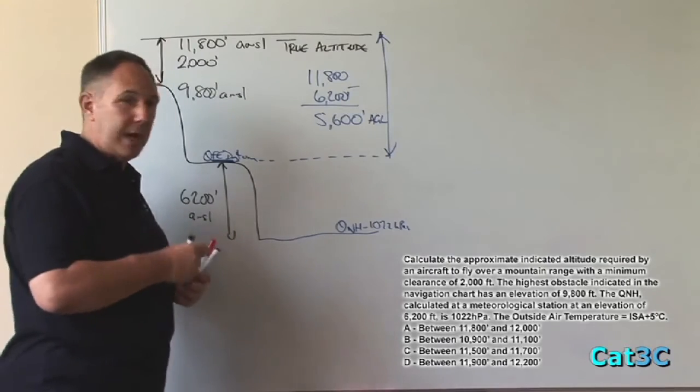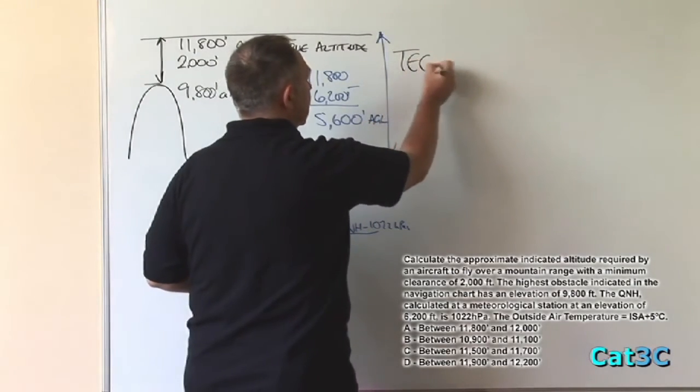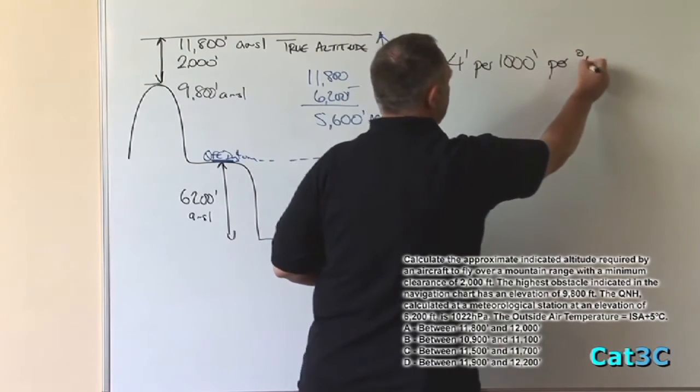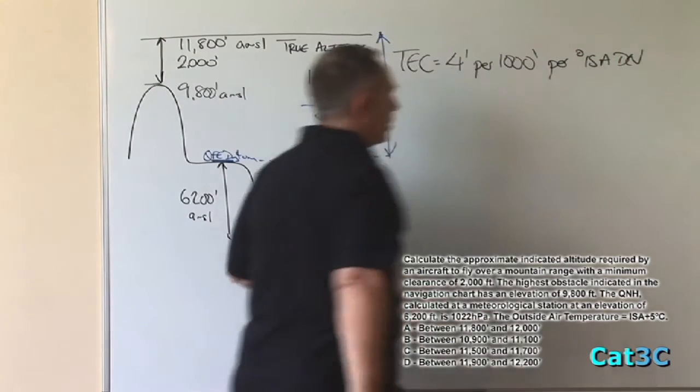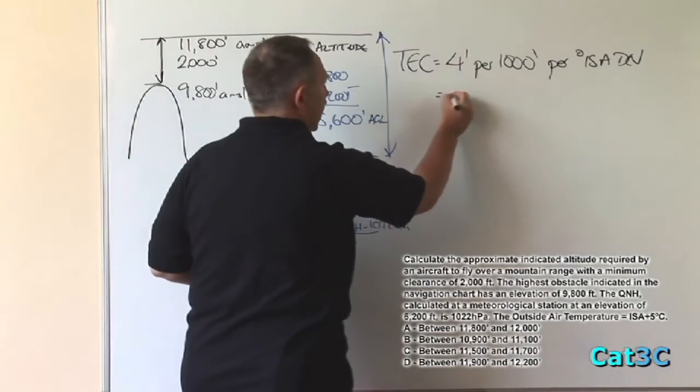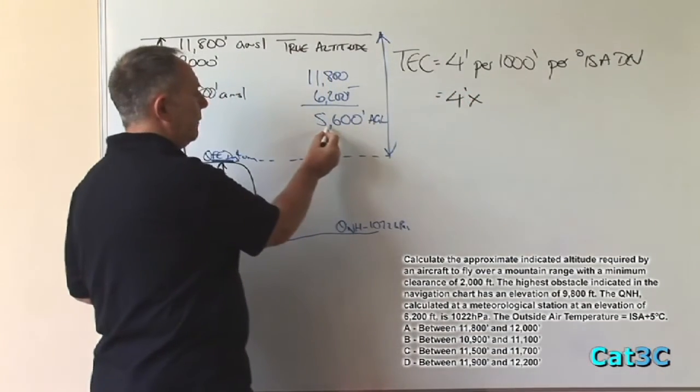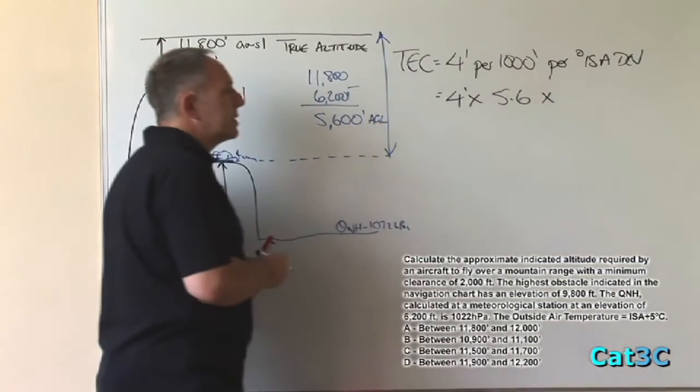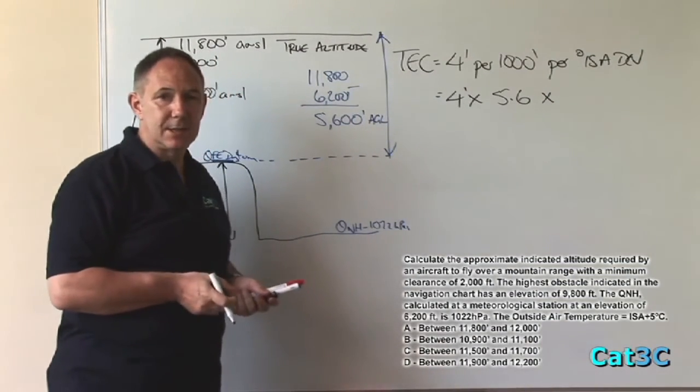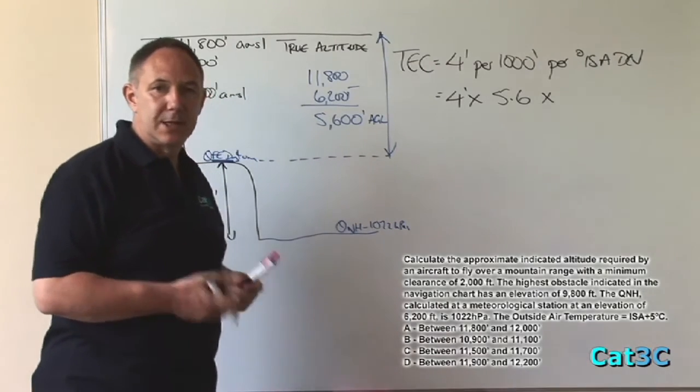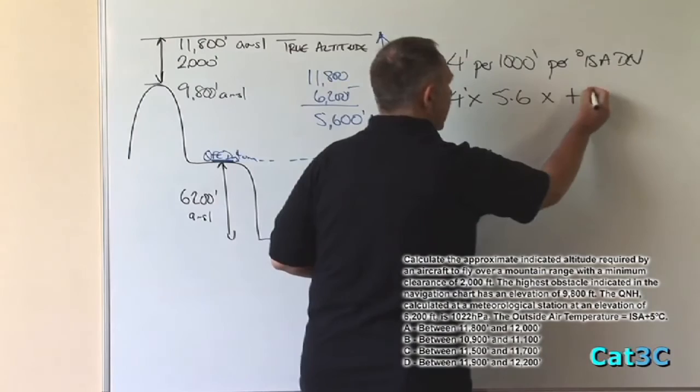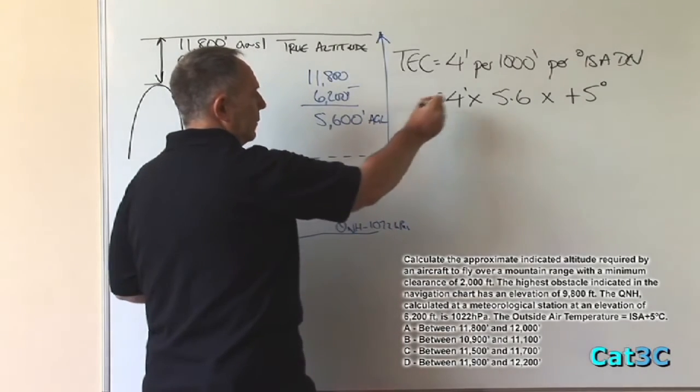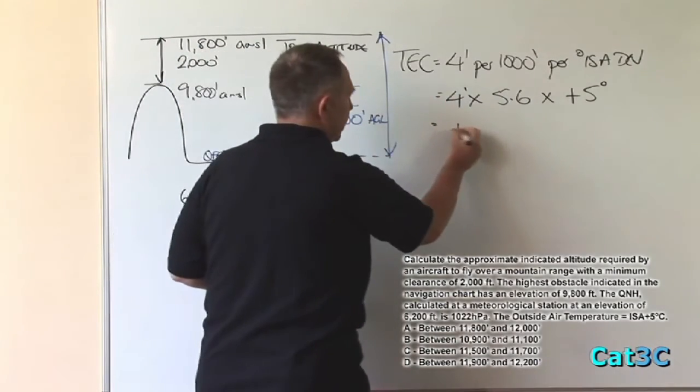In order to calculate the temperature error correction, it's equal to 4 feet per 1,000 feet per degree of ISA deviation. Equals 4 feet times 5,600 divided by 1,000, 5.6 times the ISA deviation. In this question, we don't need to calculate it because we're already told that the outside air temperature is ISA plus 5. So therefore, we simply enter plus 5 into that part of the equation. Multiply these numbers together, 4 times 5.6 times plus 5 is plus 112.